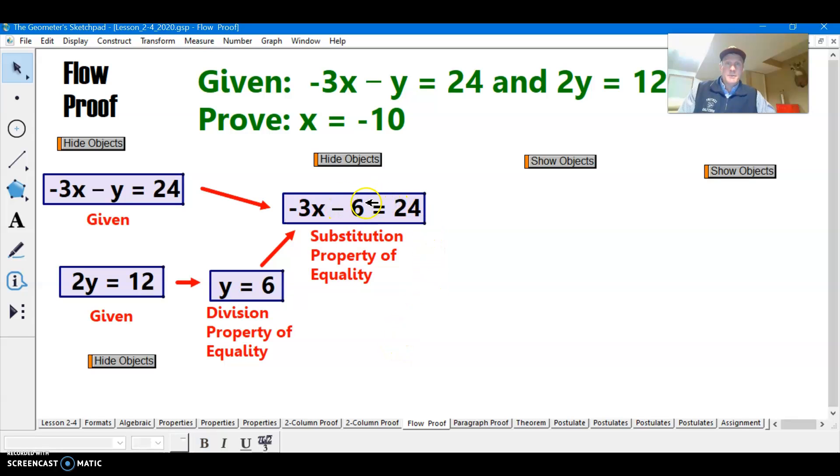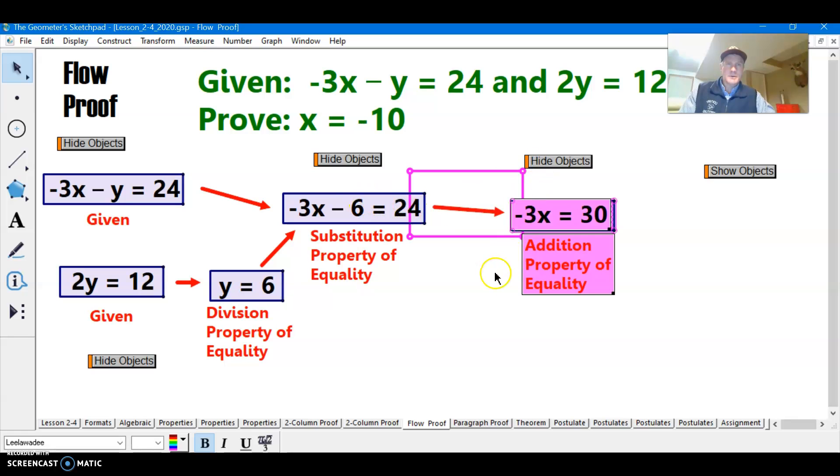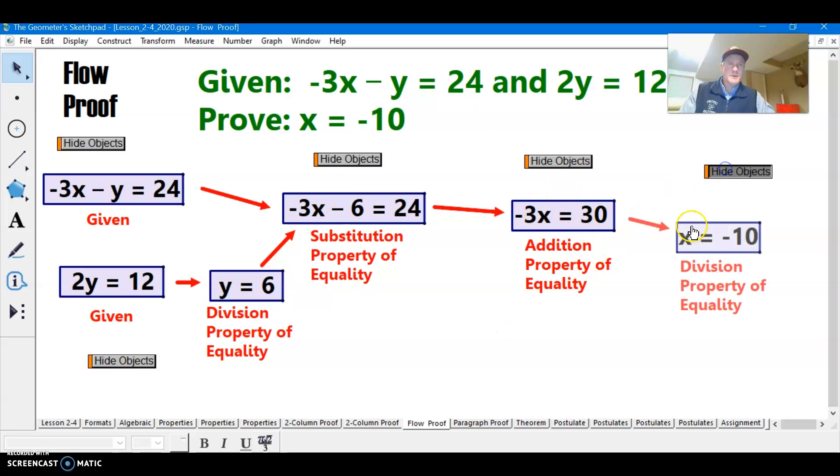Now we only have one variable, and we're going to add 6 to both sides of the equation. And we get negative 3x equals 30. Addition property of equality, because they added 6 to both sides. Last step, divide both sides by negative 3, and x is equal to negative 10. Division property of equality, and you are done.